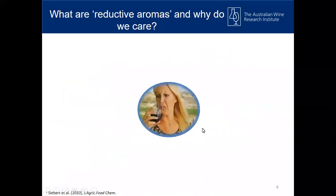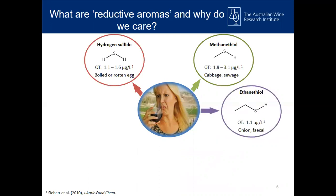I'm sure that everybody listening today is quite familiar with reductive aroma compounds in wine, but I thought I'd give a quick recap on some of the main culprits. When we see reductive aroma compounds in wine, we usually look at hydrogen sulfide, methanethiol, and ethanethiol. They impart aromas of boiled and rotten eggs, rotten cabbage and sewage, as well as onion and fecal aromas. What makes them so important is that they impart negative aromas when present in very low concentrations — at about one microgram per liter.